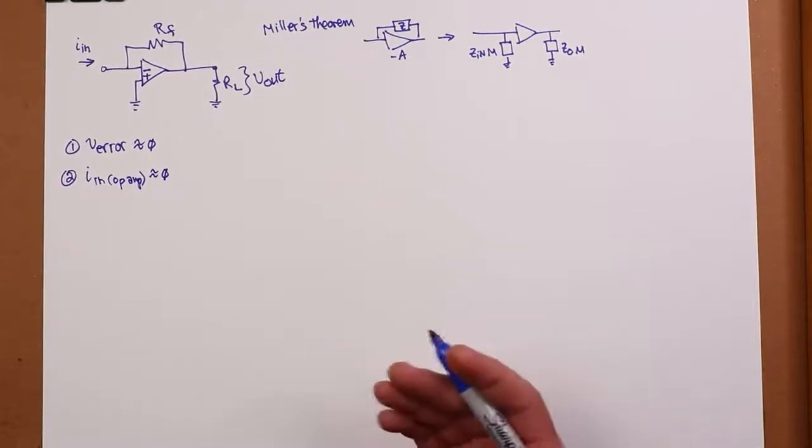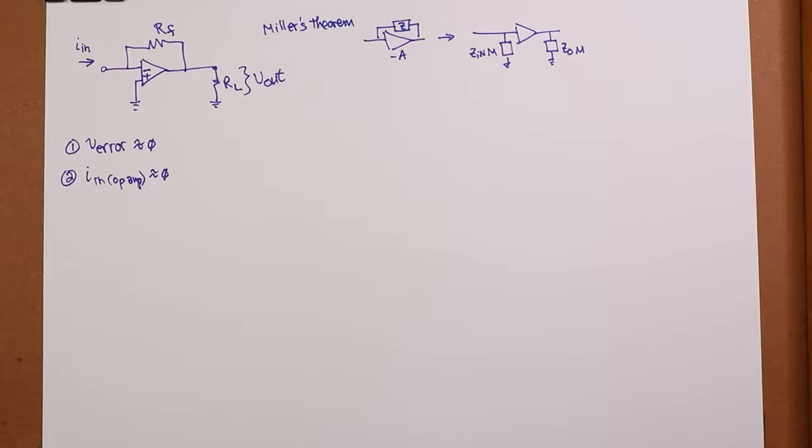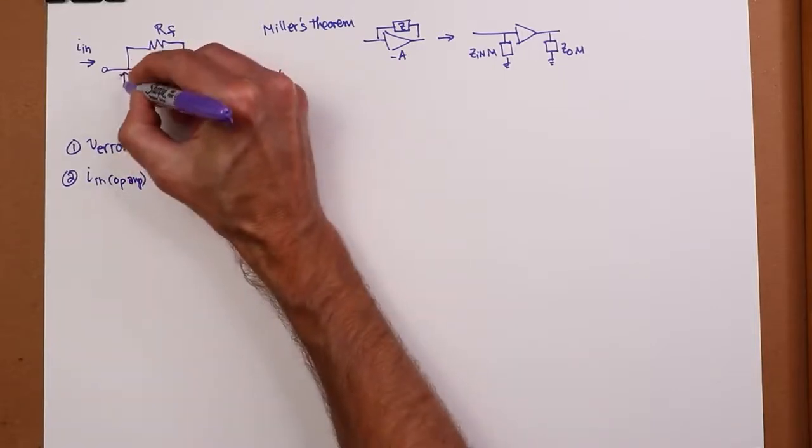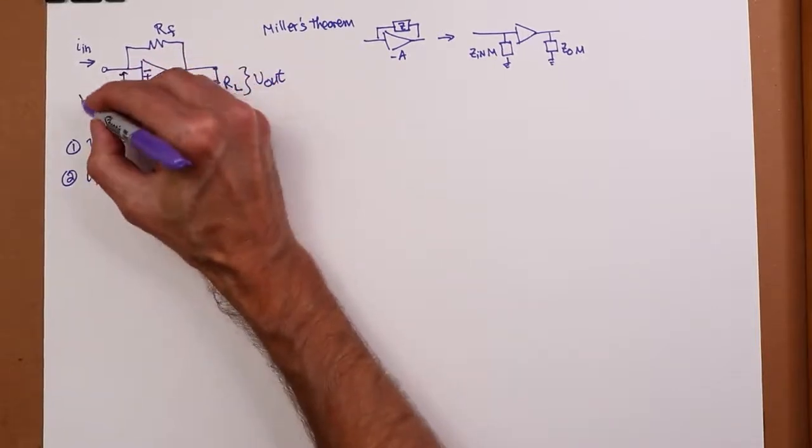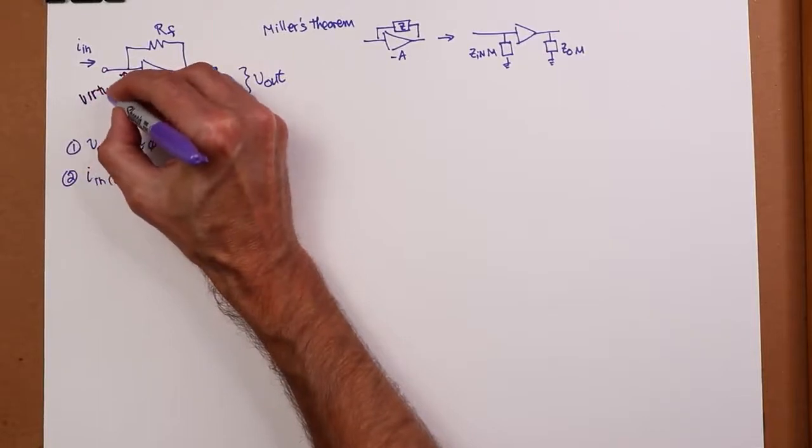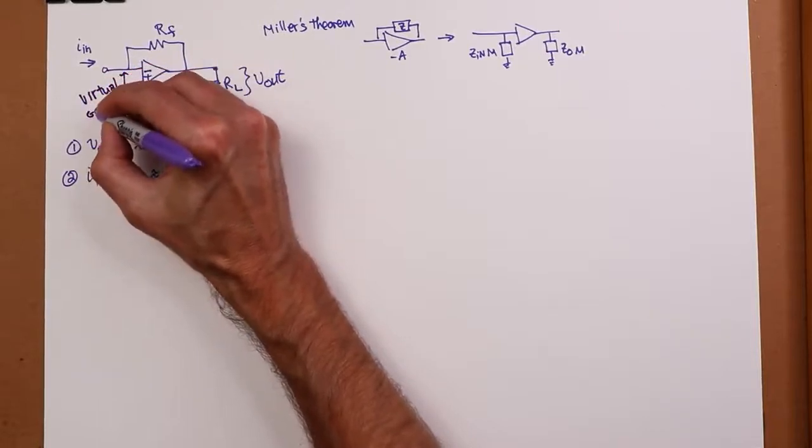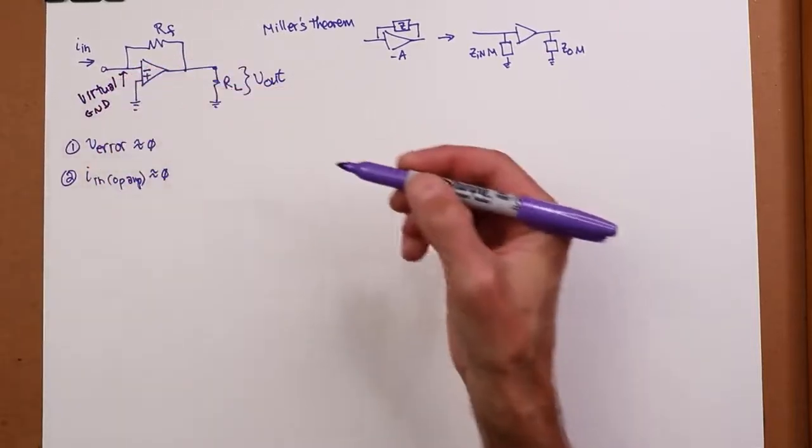All right, so what ends up happening? Well, when you look at this circuit, if the differential input voltage is ideally zero, then this point right here is virtually ground. And we in fact call that a virtual ground. It's not really ground, right? I mean, you wouldn't want to